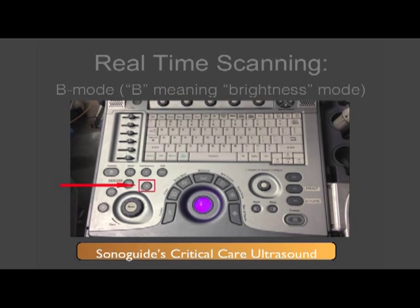You will then need to select the proper imaging modality. This is a version of the GE Logic ultrasound machine. However, on any ultrasound machine you are using, it is important to select the B or brightness mode in order to perform real-time scanning. This is also known as 2D scanning depending on the model of the device you are using.